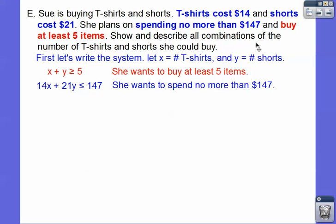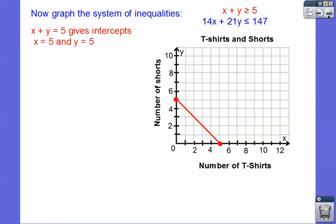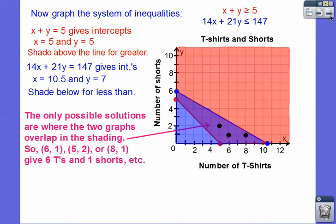It says show and describe all combinations of t-shirts and shorts, so we're going to graph that system. X plus Y gives the intercepts 5 and 5, and since it's greater than, we're going to shade above the line. This one's going to give the intercepts, 14 goes into 147 ten and a half times, and 21 goes in there 7 times. So I get these intercepts, and this one is less than or equal to, so it's going to be below the blue line. We want just the intersection of the two, so our solutions are going to be in the middle of those two. The only possible solutions are where those graphs overlap.